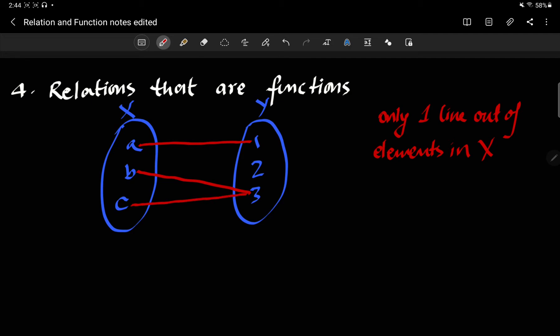That this particular diagram that I just drew does not violate this condition. Because there is one line out of every element in x. It doesn't say about how many lines into any element in y. So this is a valid, this is called a function. We're going to have multiple definitions or multiple ways of thinking about functions, but this is the most basic one.